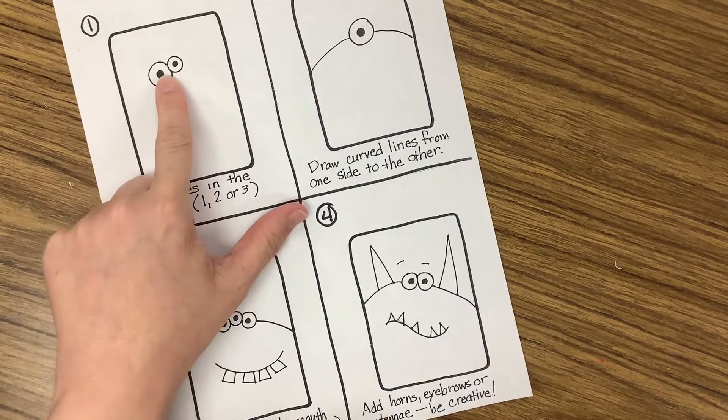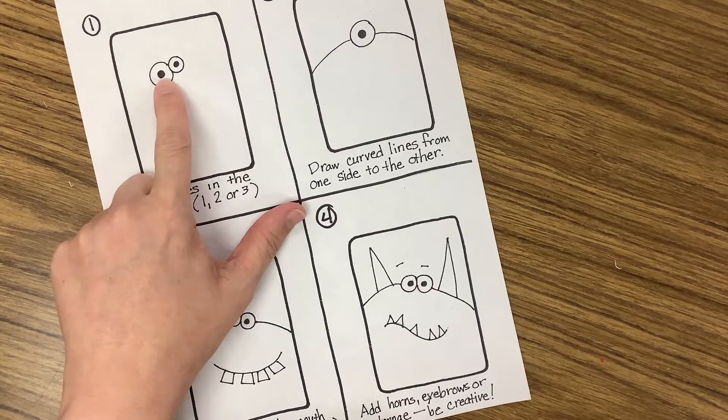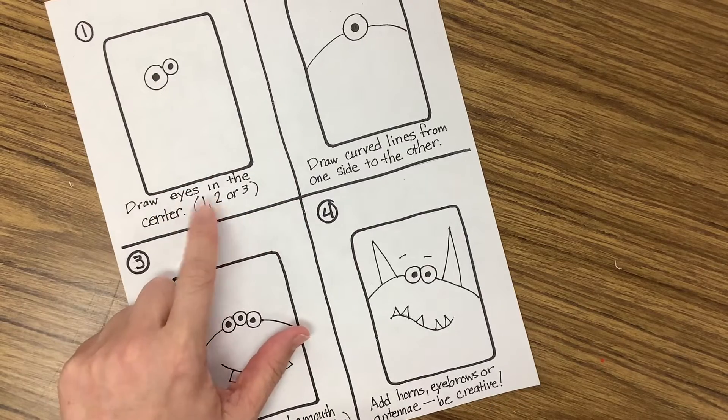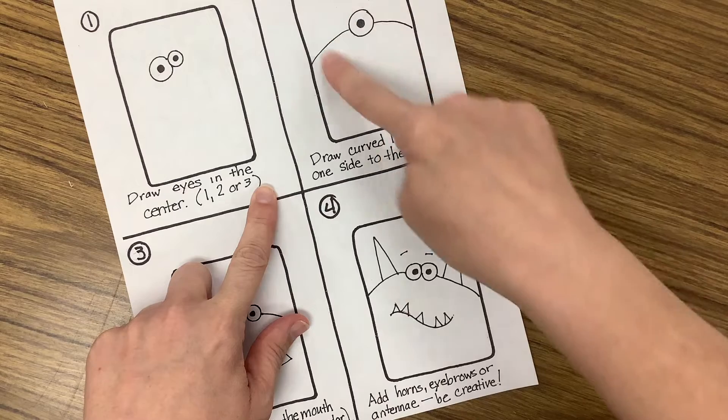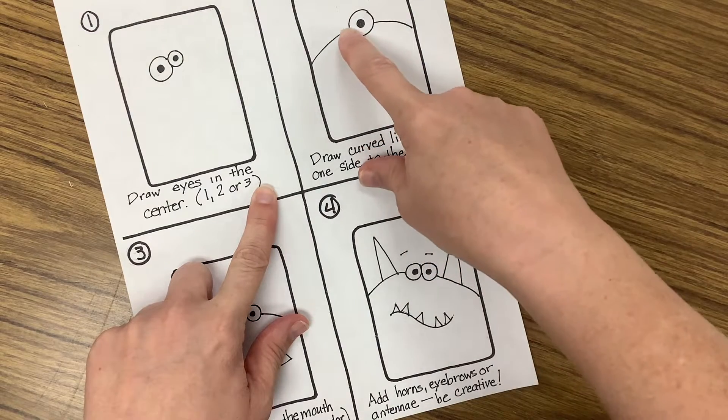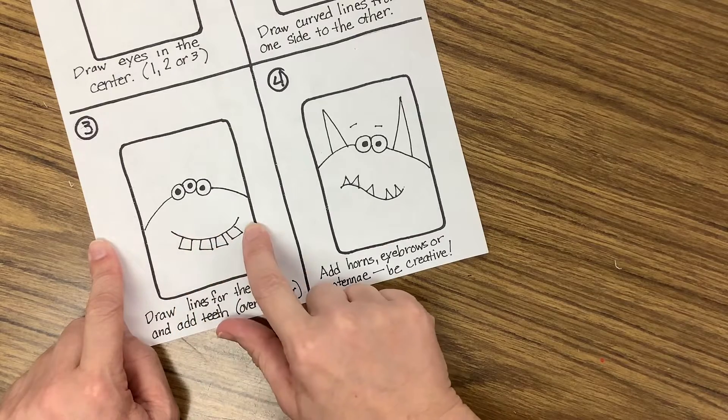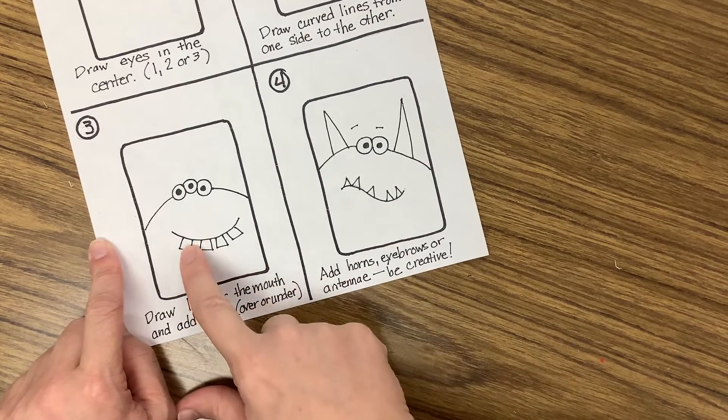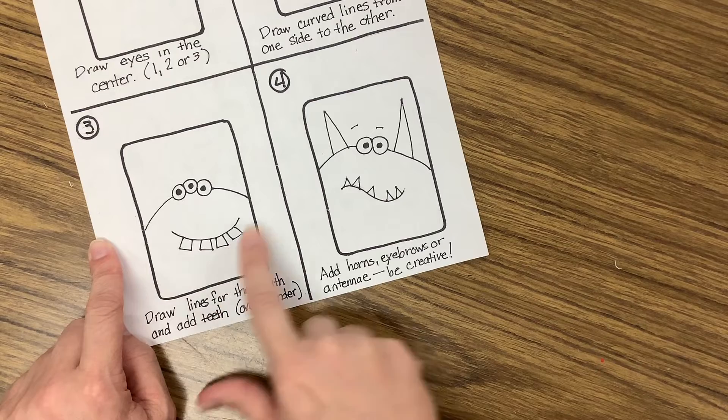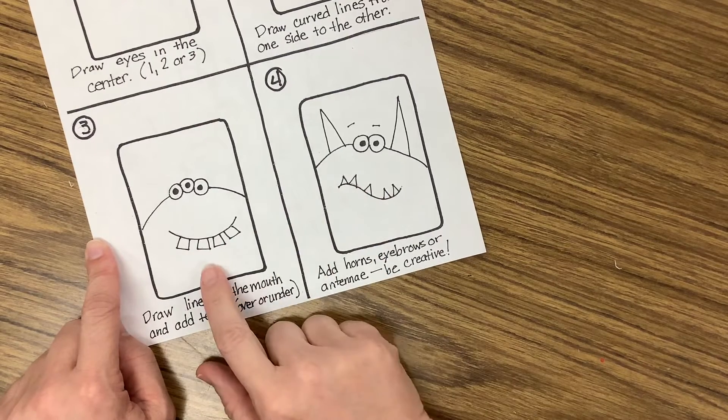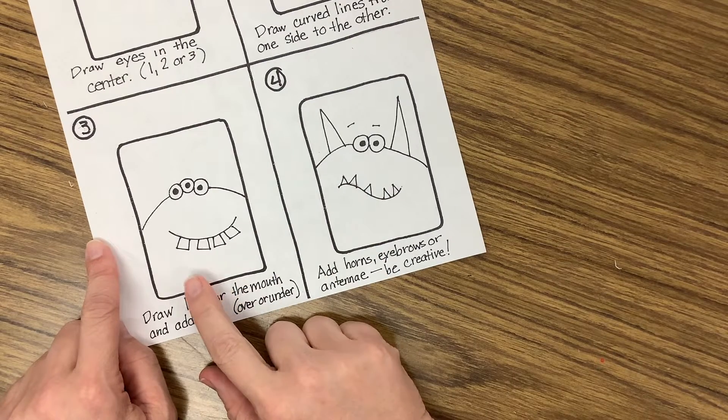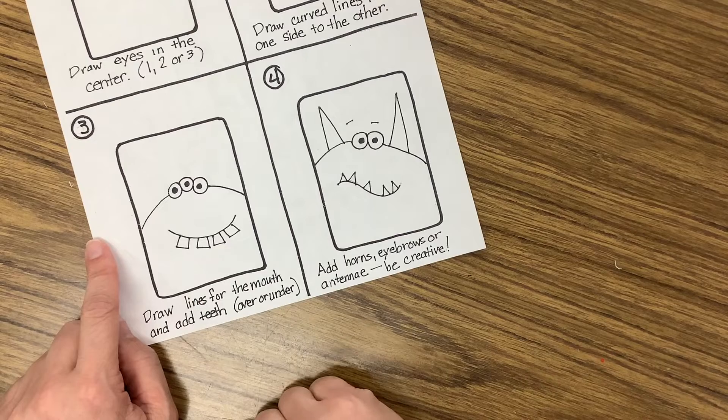So you're going to start off with eyes. You can have them different sizes. I recommend using one, two, or three eyes. From the eye, you want to draw curved lines. And then from there, you can make your mouth. With a mouth, you can add teeth. You can have square teeth or pointed teeth. Don't add too many and make sure they're really nice and big because when you do it with glue, you'll need bigger shapes.